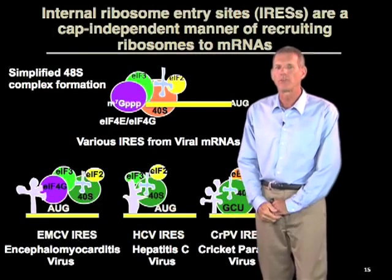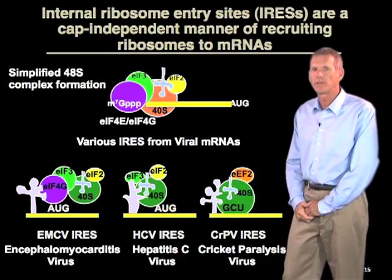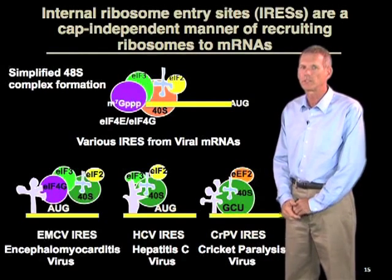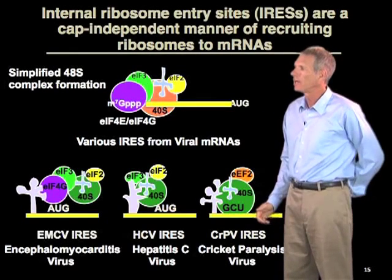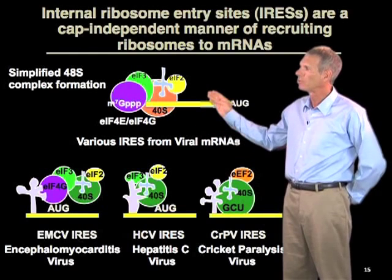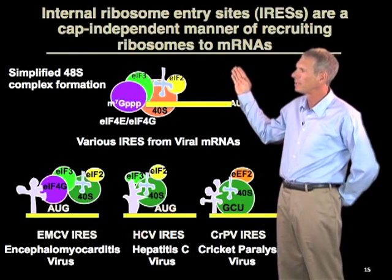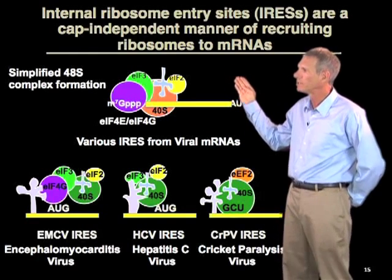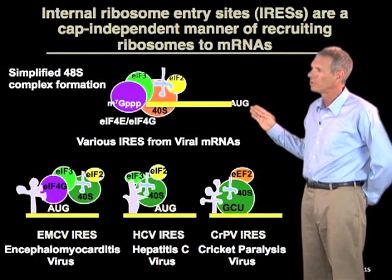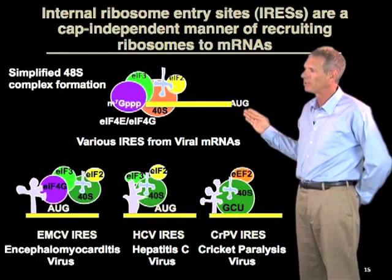In some cases, ribosomes can be loaded on messages independent of the cap structure. The most extreme version of this is what's called an internal ribosome entry site, or an IRES, where ribosomes directly interact with the message.